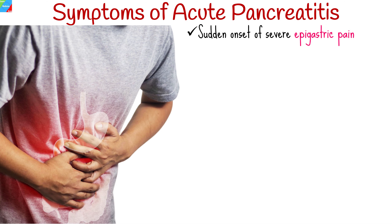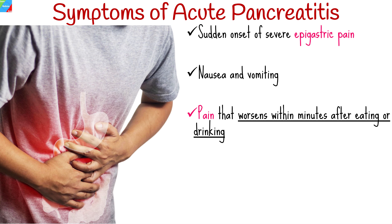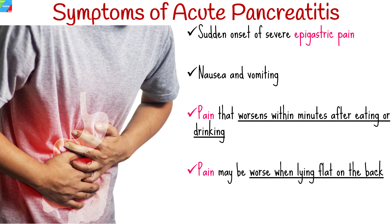The initial presentation of a patient with acute pancreatitis is typically a sudden onset of severe epigastric pain, or pain in the upper left side or middle of the abdomen, which can radiate through to the back. This is accompanied by nausea and vomiting. The pain may worsen within minutes after eating or drinking, more commonly if foods have a high fat content. The pain may be worse when lying flat on the back and becomes constant and more severe, lasting for several days.